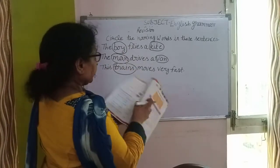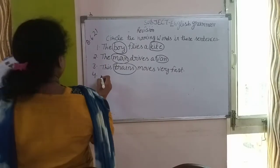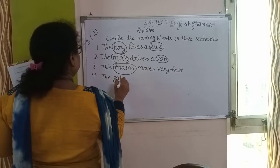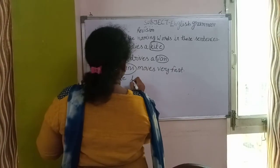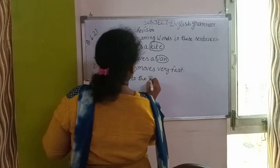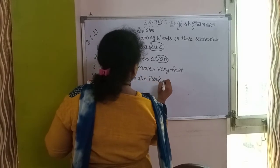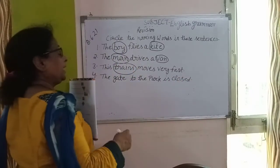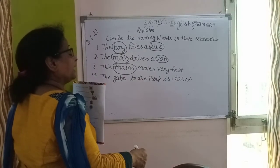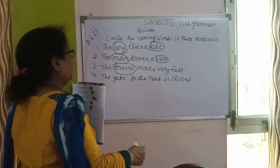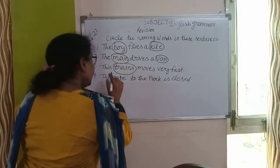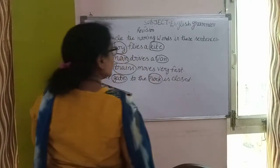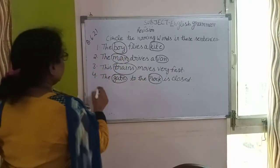Fourth है: The gate to the park is closed. जो park का gate है, वो बंद हो है. तो इसमें कौन कौन सा है? Gate है, और park है, क्योंकि park क्या है — एक place है.